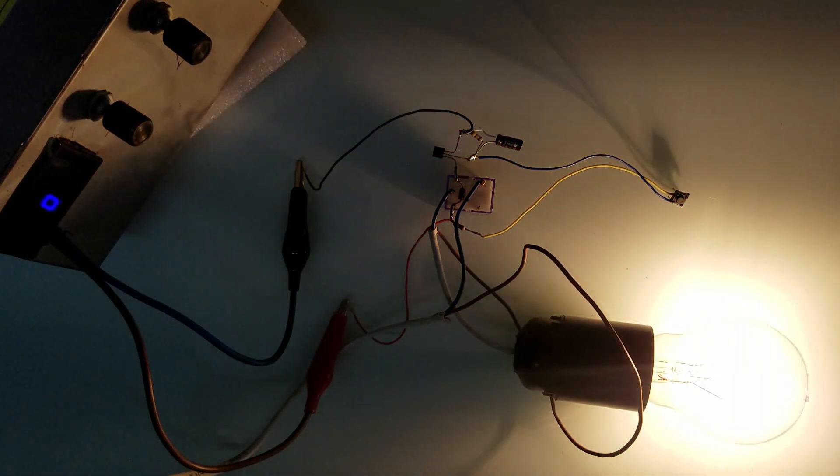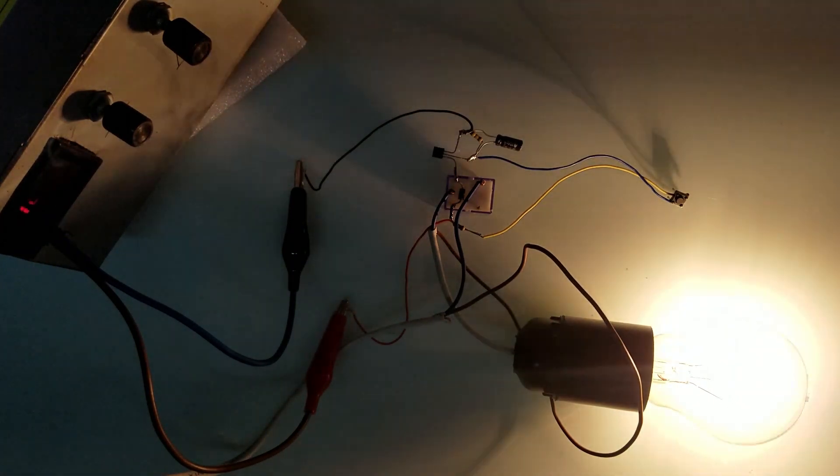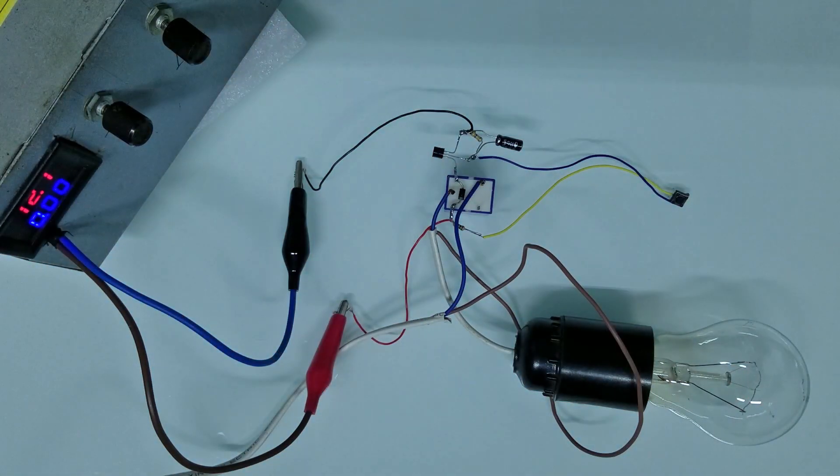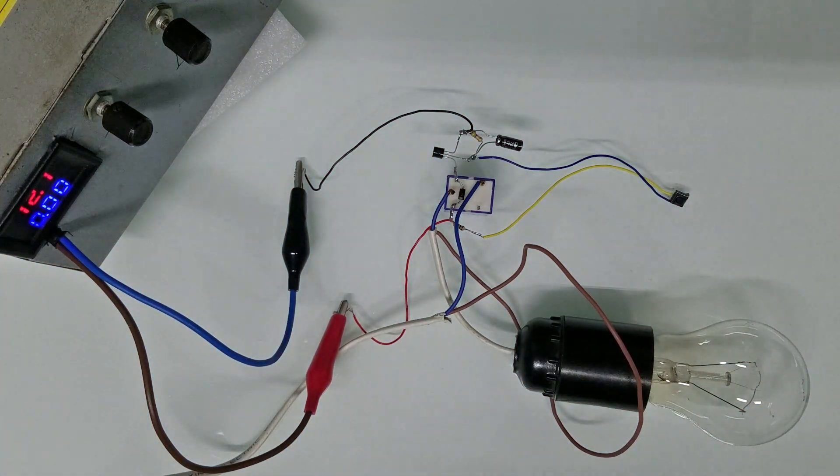Also, it is easy to change the amount of time the bulb stays on. You can do it by changing the resistor or capacitor values. For example, you can use a 470uF capacitor instead of 47uF and this device will stay on 10 times longer.